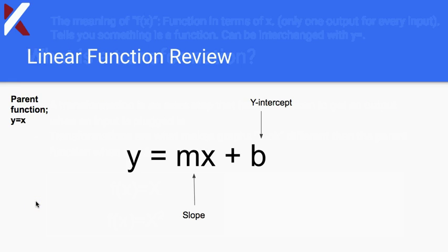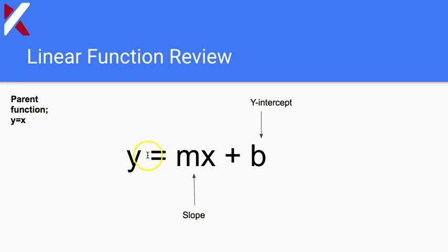Let's review the concept of a linear function. The parent function of a linear function is y = x. You already know point-slope form, which is y = mx + b, where m is the slope and b is the y-intercept. You could also look at this from a transformations perspective: m could represent a vertical stretch or vertical compression, and b could represent a vertical shift. This is just a different way of looking at the same operations.